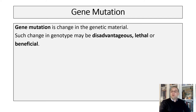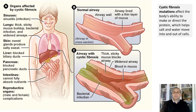So far we have been looking at gene mutations — specifically point mutations. A gene mutation is a change in genetic material. Such a change in genotype may be disastrous, lethal, or beneficial. Let's take a look at different mutations occurring in humans. Some of you may have heard of cystic fibrosis. Cystic fibrosis is caused by a point mutation — a change in one nucleotide. Cystic fibrosis mutations affect the body's ability to make or direct the protein which helps salts and water move into and out of cells.